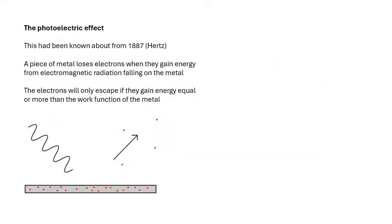People had known about the photoelectric effect since 1887, when Heinrich Hertz — known for frequency and radio waves — discovered it. Basically, when electromagnetic radiation falls on a metal, the electrons gain energy and escape, becoming photoelectrons. However, electrons will only escape if they gain enough energy, determined by the work function, which is a property of the metal.